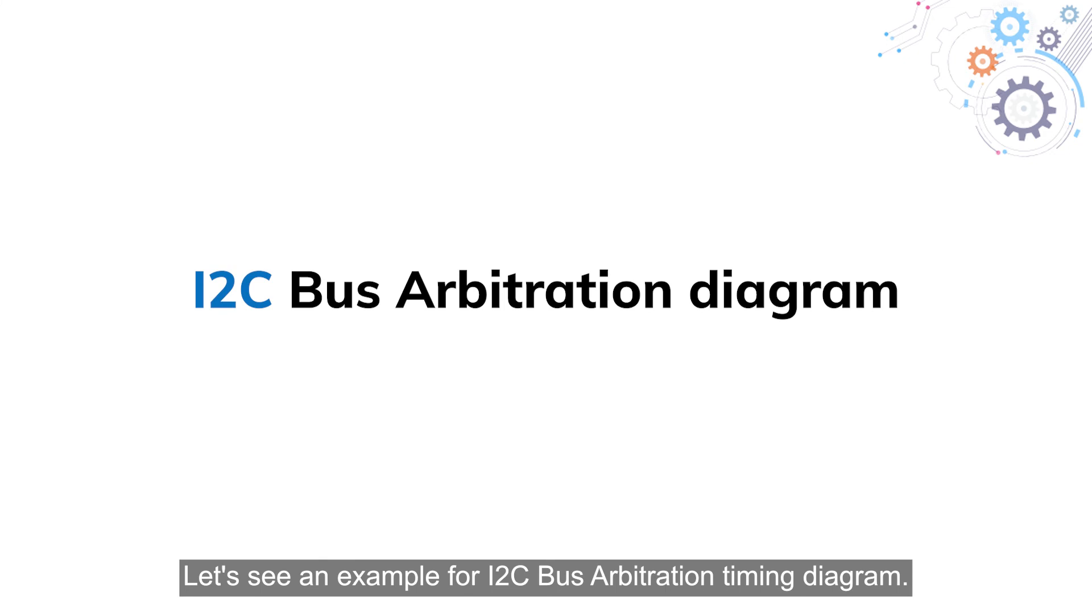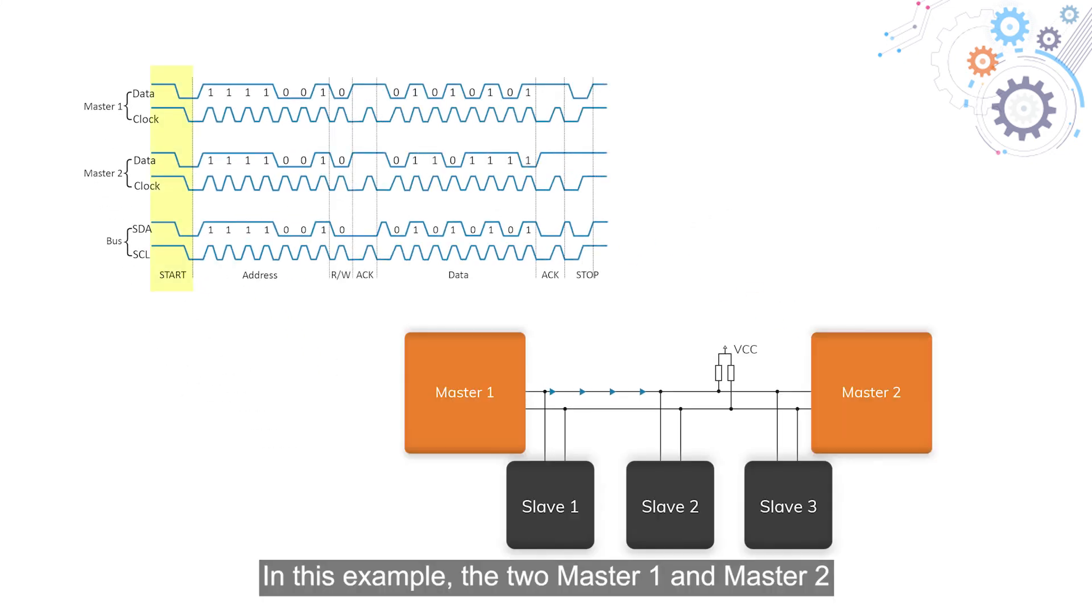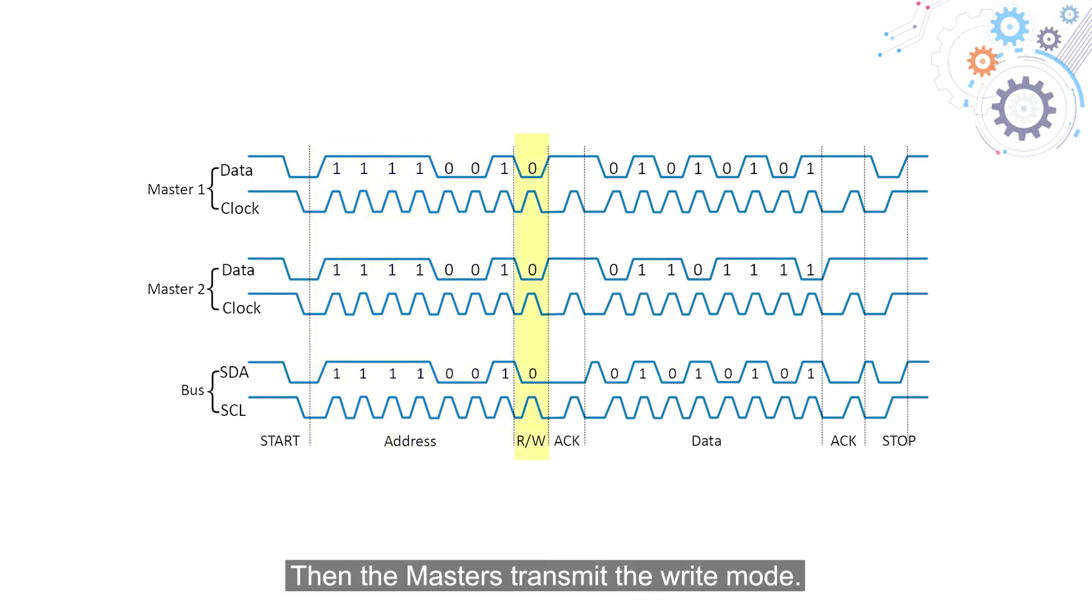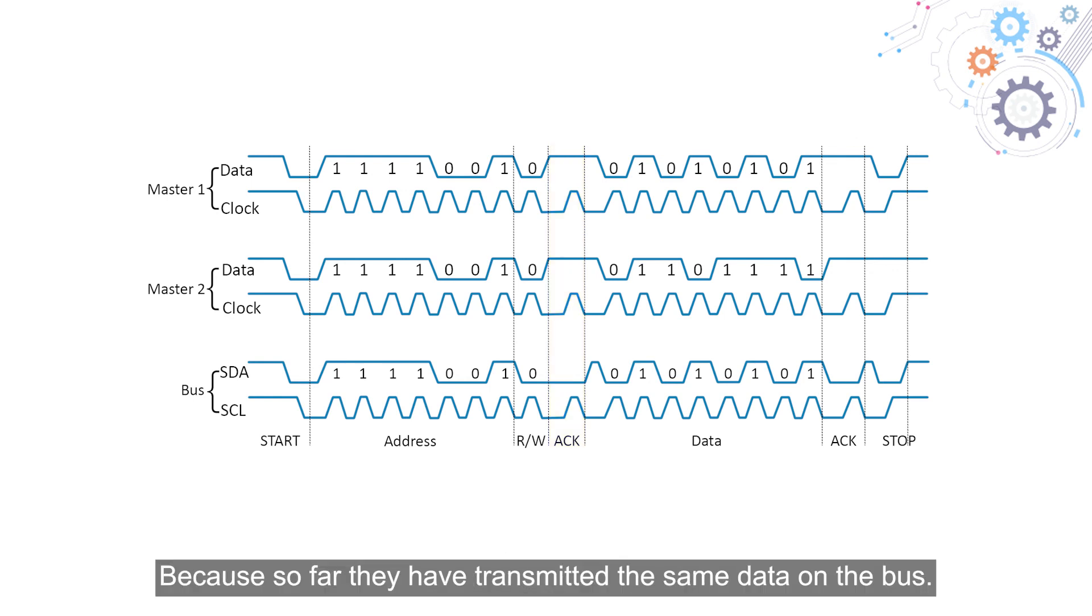Let's see an example for I2C bus arbitration timing diagram. In this example, the two masters, master 1 and master 2, have taken control of the bus line, have the same speed, and both of them are in write mode and want to address the same slave. The masters transmit the same address at the same time on the bus. Then the masters transmit the write mode. The slave acknowledges it, and so far both masters are under the impression that they own the bus, because so far they have transmitted the same data on the bus.